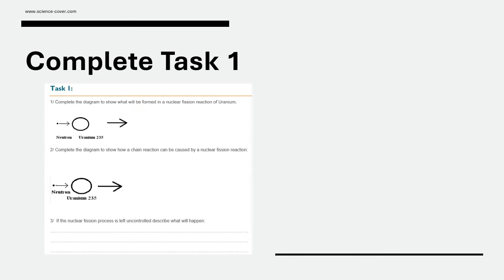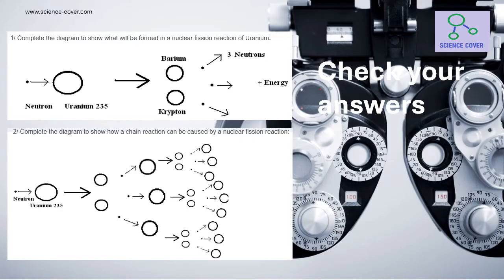Let's check our answers. Complete the diagram to show what will be formed in a nuclear fission reaction of uranium. On the left-hand side we should show a neutron being absorbed by uranium-235. We could show uranium-236, however it's so unstable we may skip this and just show the barium and krypton left behind after it breaks up. This releases three neutrons and energy.